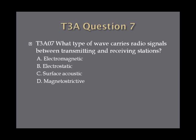Question 7: What type of wave carries radio signals between transmitting and receiving stations? A. Electromagnetic. B. Electrostatic. C. Surface acoustic. Or D. Magnetostrictive.